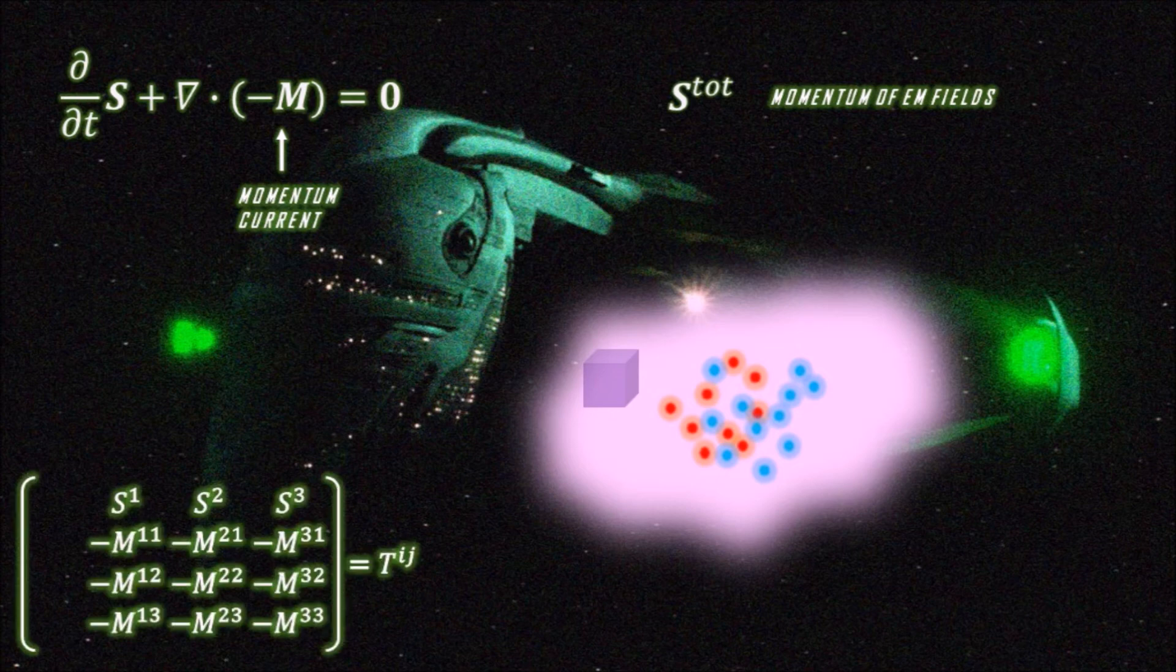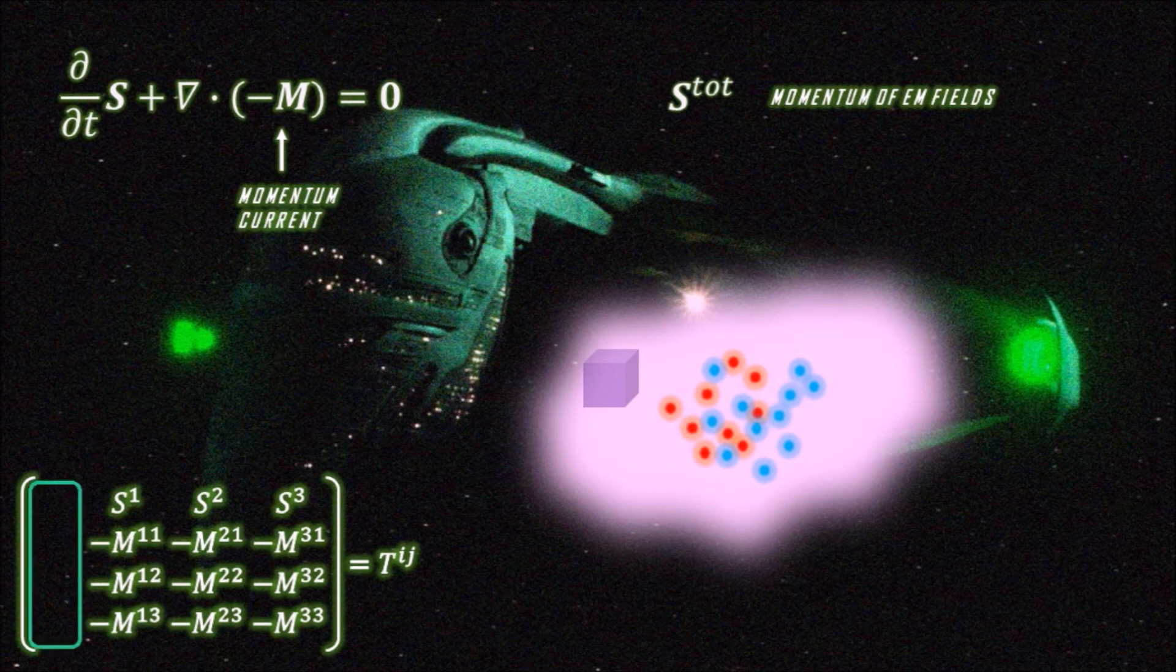So, we now know most of the elements of the energy-momentum tensor, but we still need the first row, which consists of the energy and energy current.